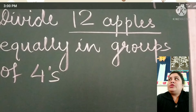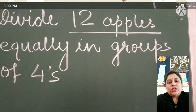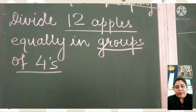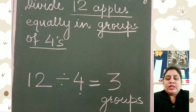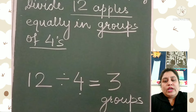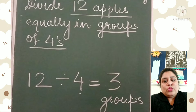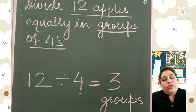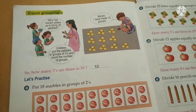In equal grouping, there are twelve apples. You have to divide these twelve apples into groups of four — four, four, four apple groups. So write twelve divided by four. Using the table of four: four ones are four, four twos are eight, four threes are twelve. So there are three groups, where each group has four apples.